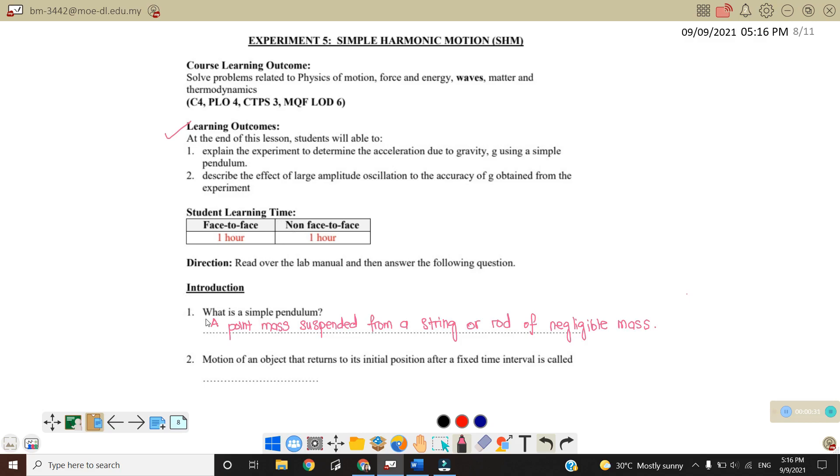So first one, introduction. What is the simple pendulum? Simple pendulum is a point mass suspended from a string or rod of negligible mass. So this is pendulum, where the string here that we attach with the pendulum is negligible. Next, motion of an object that returns to its initial position after a fixed time interval is called periodic motion.